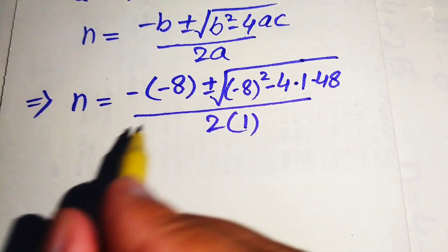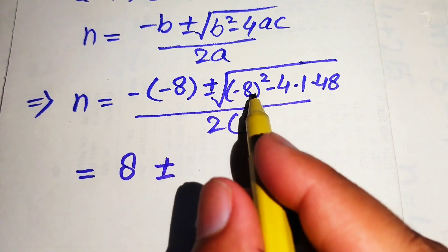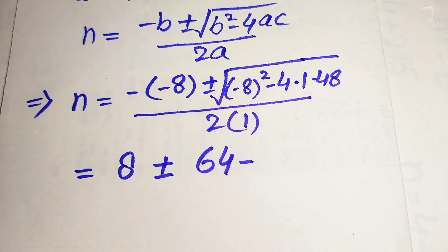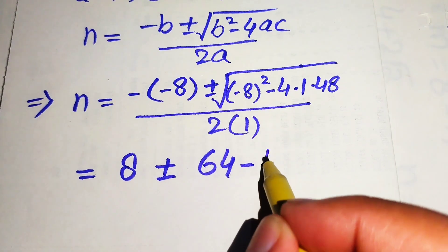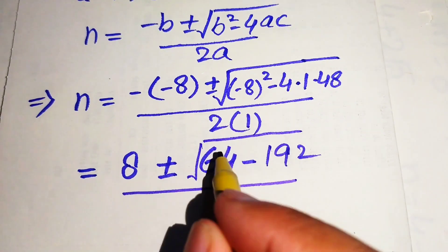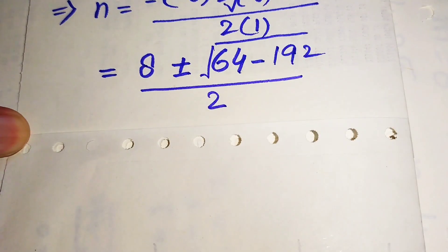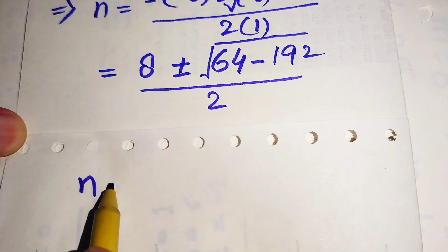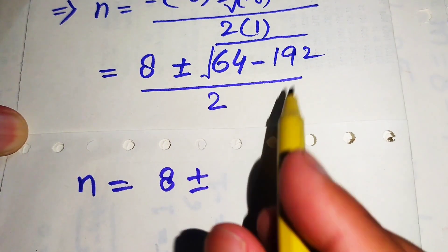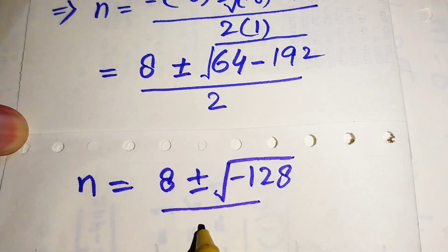Simplifying, the numerator becomes 8 plus or minus the square root of 64 minus 192. Since 4 times 48 is 192, we get 64 minus 192 equals minus 128. So n equals 8 plus or minus the square root of minus 128, divided by 2.